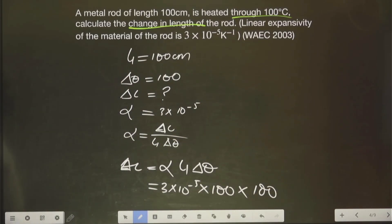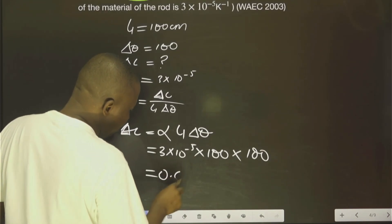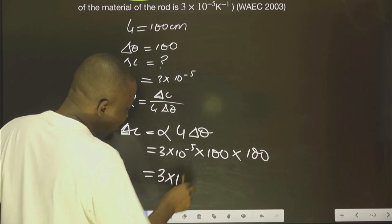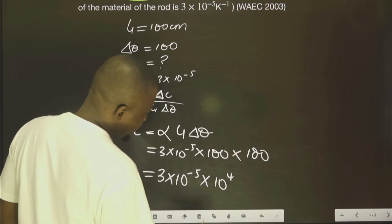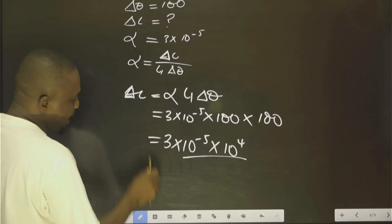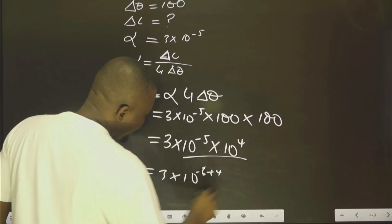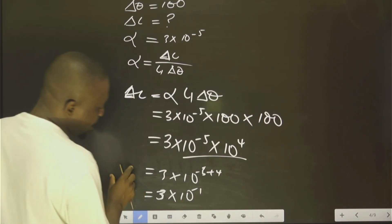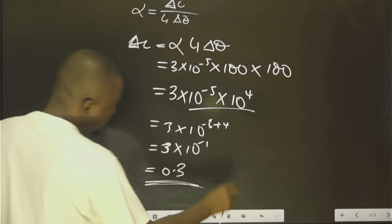All we need to do now is multiply. We can write it as 3 × 10⁻⁵ multiplied by 10⁴ (since 100 × 100 = 10,000 = 10⁴). Using indices with the same base: 10⁻⁵ × 10⁴ = 10⁻¹. So the result is 3 × 10⁻¹, which equals 0.3 metres.